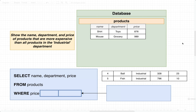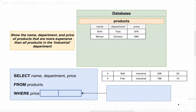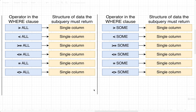Now that we understand how we'd solve it in diagram format, let's figure out how we'd solve it with SQL. One way would be to use a MAX aggregate function on the price of all products in industrial — something like SELECT MAX(price) FROM products WHERE department equals industrial. This would absolutely work, but for the purposes of this video I want to show you a slightly different solution using an operator we have not seen before.